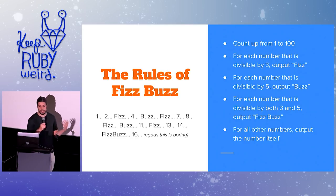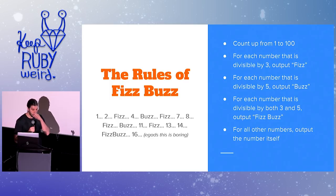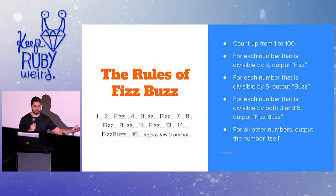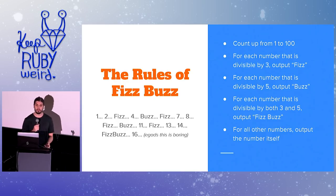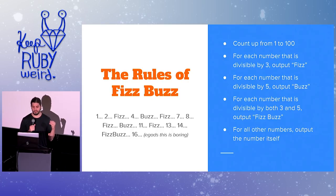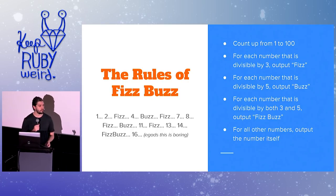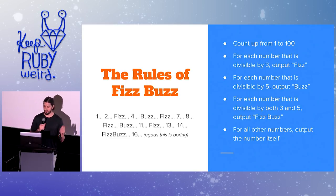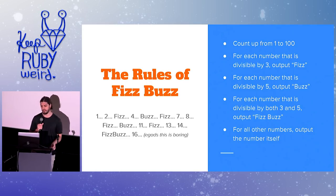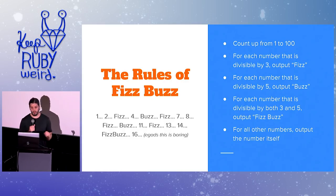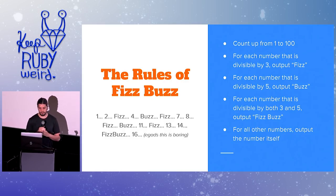Before we begin, I want to review the rules of FizzBuzz. In a normal interview where you're asked to write a FizzBuzz program, you count from 1 to 100. Each time one of those numbers is divisible by 3, you output Fizz. Each time a number is divisible by 5, you output Buzz. If they're divisible by both, like 15, you output FizzBuzz. For all the other numbers, we output the number itself.